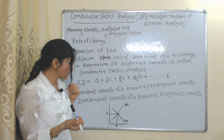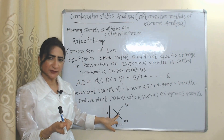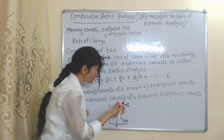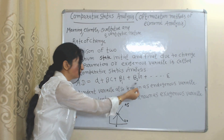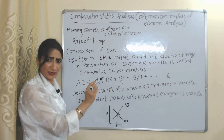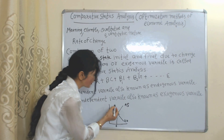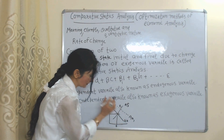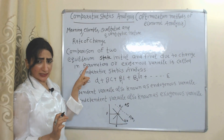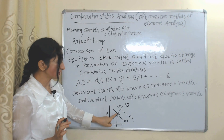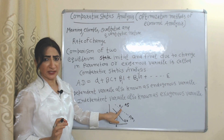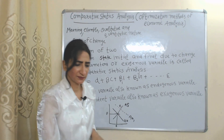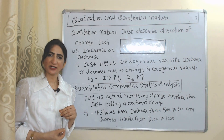For example, our initial equilibrium is E, where aggregate demand equals aggregate supply. Now suppose any exogenous variable or parameter changes, causing our aggregate demand to shift from AD to AD1. This is our new equilibrium, and comparative static analysis does the comparison between the initial and new equilibrium.